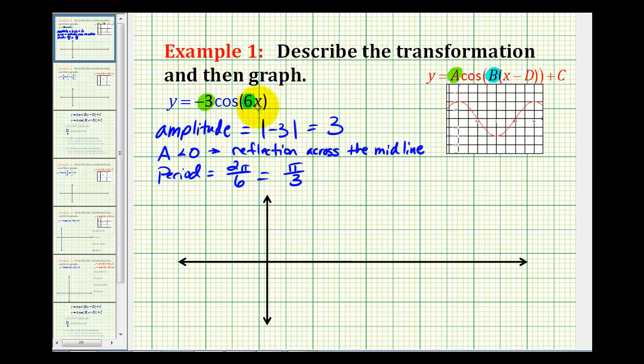Now let's go ahead and graph the given function based upon what we know about the parent cosine function. We'll graph this over one period, so we'll start at zero radians and go out to pi over three radians.